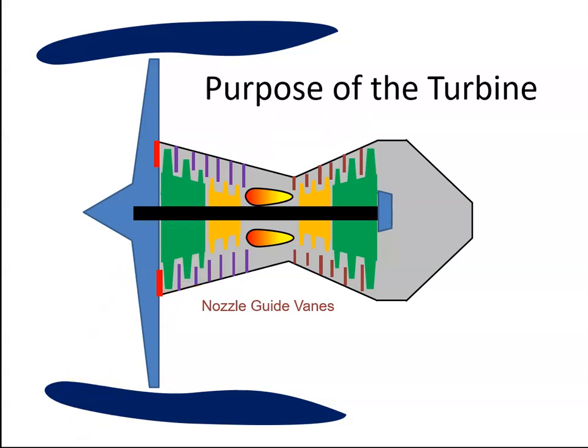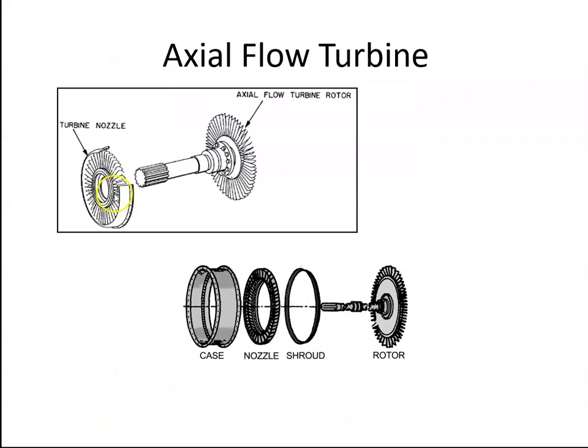So there are different types of turbines. There is the axial flow turbine. With the axial flow, we have the rotor blades and we have the nozzles, the nozzle guide vanes. And this will account for 99.999% of turbines that you will see on board an aircraft.